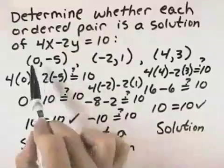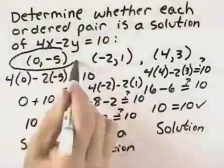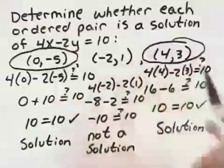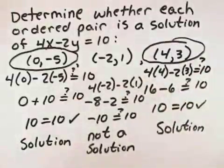So our solutions are the ordered pair 0, negative 5, and 4, 3. Because negative 2, 1 is not a solution.